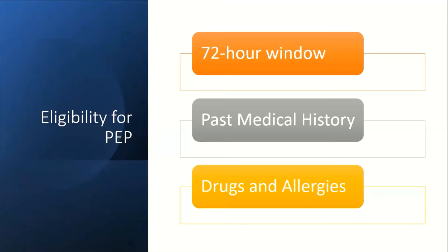We also need to know the past medical history — for example, if they have any liver or renal impairment, whether they could be pregnant (so always do a pregnancy test in women of childbearing age), and the mental health history may be relevant as well. We also need to check drugs and allergies, because there are many medications that interact with antiretroviral therapy and these must be checked.